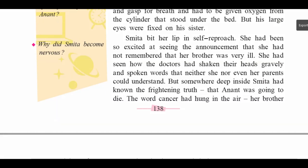Smita bit her lip in self-reproach — feeling bad about herself — because she uttered that sentence loudly when she saw the announcement in the newspaper. She had been so excited that she had not remembered her brother was very ill. She had seen how the doctors had shaken their heads gravely — seriously. And spoken words that neither she nor her parents could understand. But somewhere deep inside Smita had known the frightening truth: that Anant was going to die.